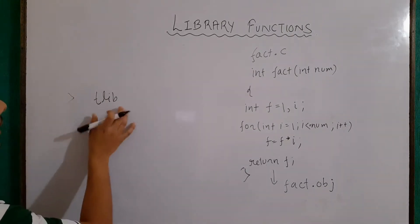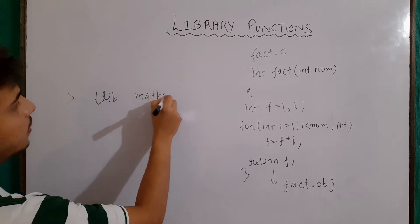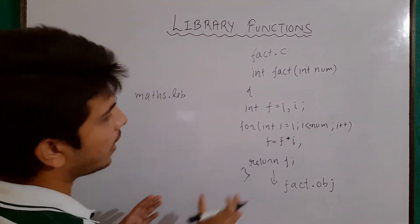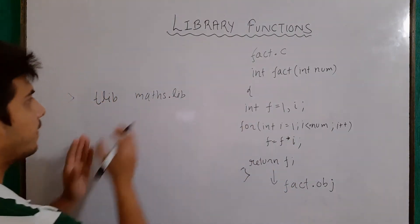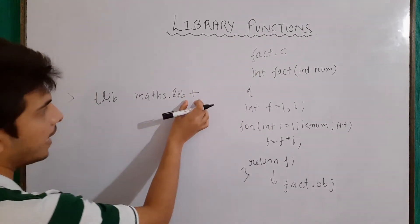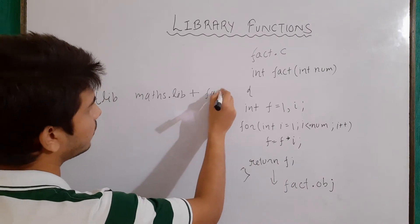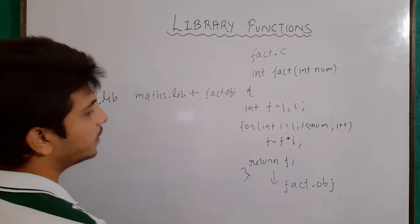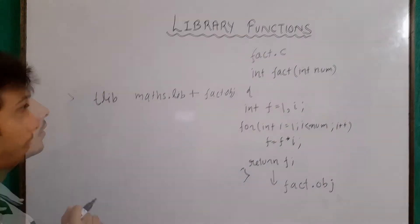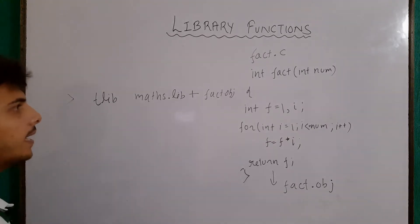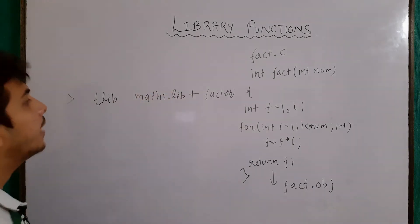In the command line, I will write: TLib, then the existing library — let's say the library is maths.lib — and since I want to add the object code of fact.obj to this library, I will write plus and then the name of the file, which is fact.obj. Now the object code for fact.obj has been included in our maths library. Note that this is specific to the Turbo C compiler; different compilers use different functionality to add object files to existing libraries.